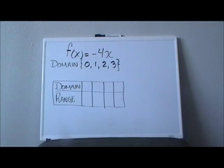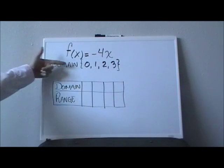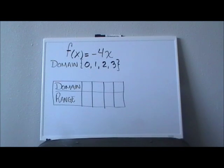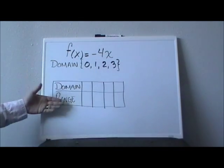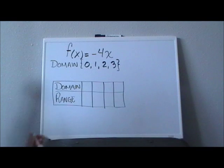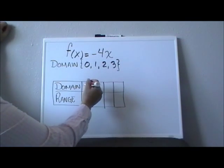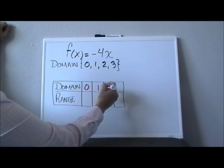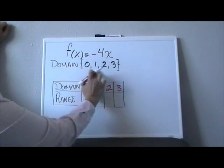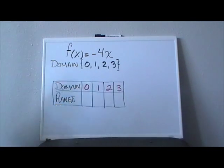The first thing that I want you to notice is that domain, we know that it is all our possible x values. So in my t-chart I am just going to list my domain: 0, 1, 2, and 3, which is exactly the same values that are given to me.